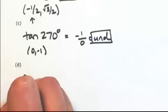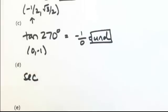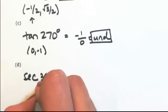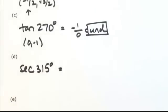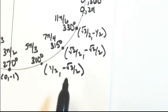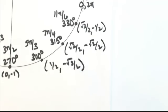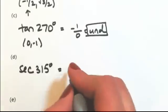Okay, let's say maybe the secant of 315°. So locating 315°, we have our ordered pair, √2/2, -√2/2.